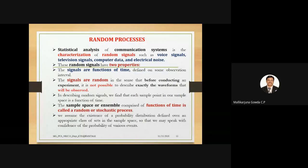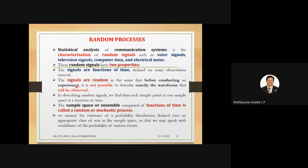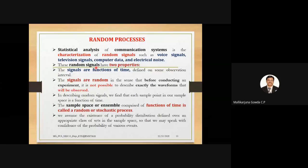In random processes, the statistical analysis of communication systems means we do this with noise. Statistical analysis of communication systems is the characterization of random signals. What are random signals? Voice signals, television signals, computer data, electrical noise — they are all random signals. To do statistical analysis of any communication system, we need to characterize these random signals first. There are two properties of random signals.